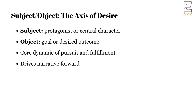In detective stories, the subject is the detective and the object is the solution to the mystery or the apprehension of the criminal. The subject-object relationship creates a dynamic of pursuit and fulfillment, with the subject striving to attain the object despite various obstacles. The interaction between the subject and the object is central to the narrative's progression. The subject's quest for the object typically involves a series of actions and events that form the plot. This pursuit often involves twists, turns and challenges that test the subject's resolve and capabilities. The success or failure of the subject in attaining the object determines the narrative's resolution.